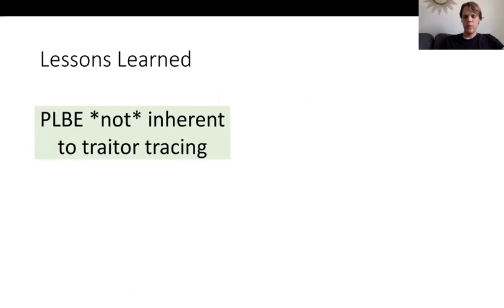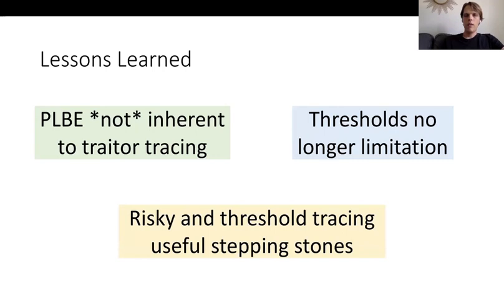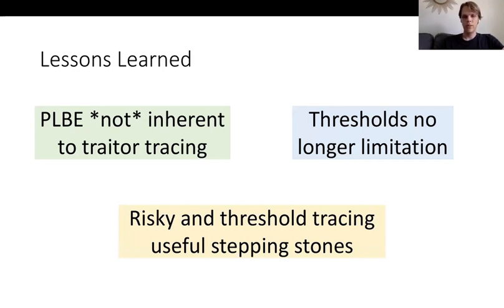In summary, the high-level takeaways from this work are: first, private linear broadcast is not inherent to achieving good traitor tracing results. Second, threshold tracing is no longer a limitation — we can generically remove thresholds without affecting parameter sizes. Finally, risky and threshold tracing are actually useful stepping stones to building full traitor tracing schemes. These objects were originally defined as ends in their own right or for other applications, but we have shown you can start from a risky or threshold traitor tracing scheme and achieve a full traitor tracing scheme, potentially at some cost in parameters. Thank you.